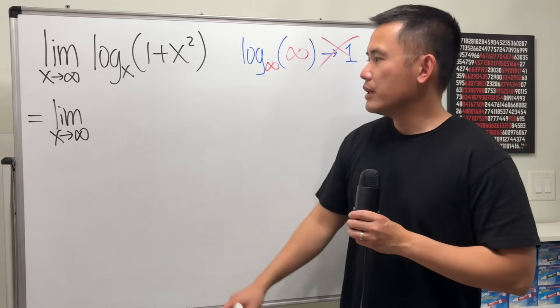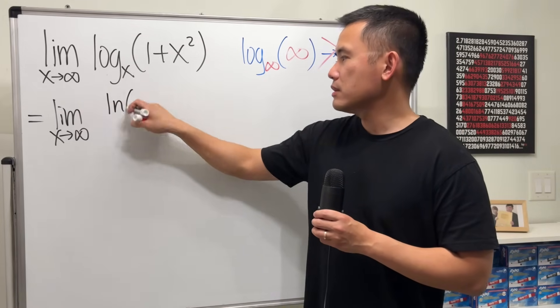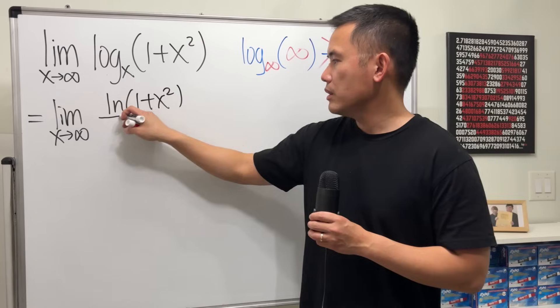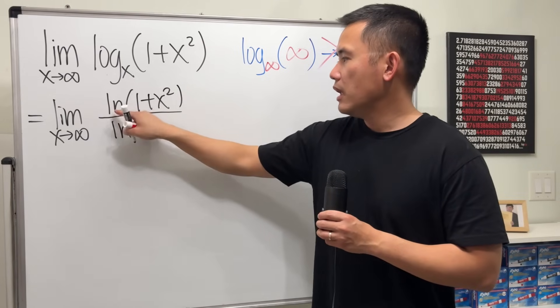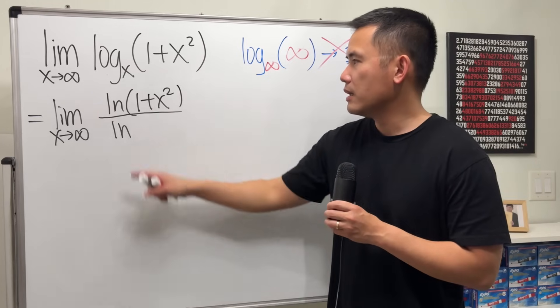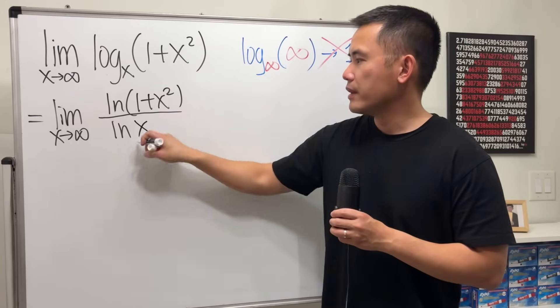The change of base formula says you can take the natural log of the input, and then over natural log of the base. As long as these two logs are the same, you can do the change of base formula. So it's like this.